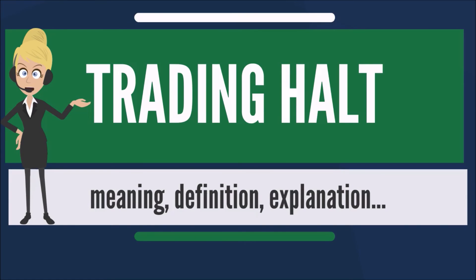A trading suspension occurs when the United States Securities and Exchange Commission, SEC, stops trading for a specific security because of serious questions about a company's assets, operations, or other financial information. Note that in this case, it is the SEC, not the exchange, stopping the security from being traded. On its website, the SEC maintains a list of trading suspensions going back to 1995.